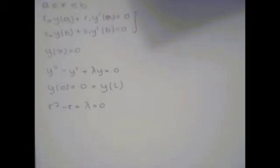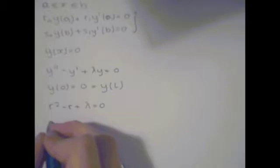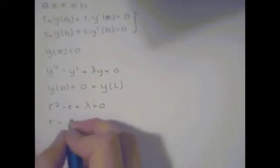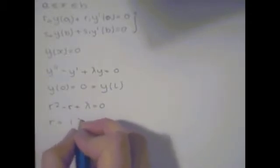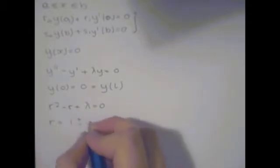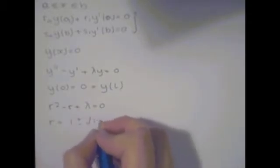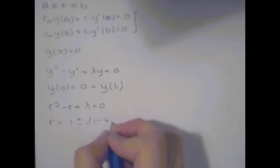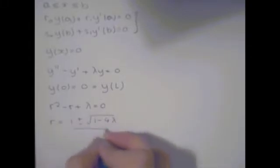Using the quadratic formula, we can see that the auxiliary equation has the roots r equals 1 plus or minus the square root of 1 minus 4λ, all over 2.